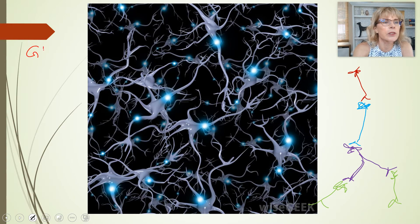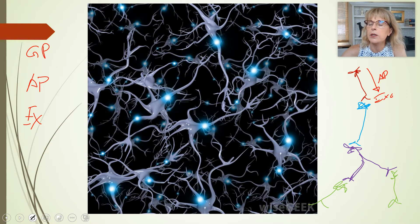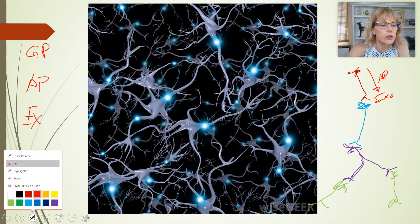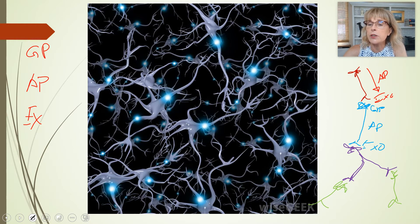We're going to have graded potentials, action potentials, and exocytosis. This nerve cell will send out an action potential, and that will cause the exocytosis of neurotransmitters. The exocytosis of neurotransmitters will cause graded potentials up in the dendrites and cell body, which might lead to an action potential. If there's an action potential, this cell will do exocytosis, and if there's exocytosis there will be graded potentials, which might lead to action potentials, which will cause exocytosis — and so on.